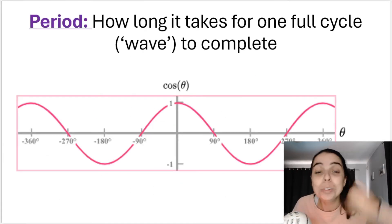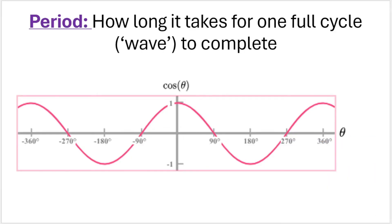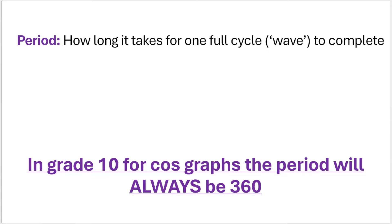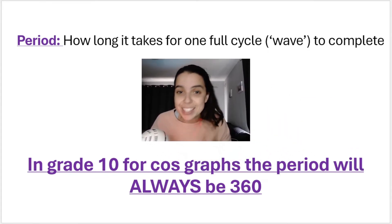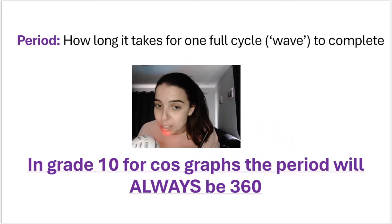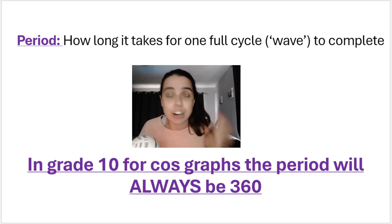You will recall that period is how long it takes for one full cycle or wave to complete. And as I showed you already earlier, this over here, so from where theta is zero to where theta is 360, stopping right over there, that would be one full wave or one full cycle. You can see that that same shape repeats itself every 360 degrees. That is why the period is 360 degrees. And in grade 10, just like for the sin graph, the period will always be 360 degrees. In grade 11 and grade 12 we change the period, but for grade 10, 360 degrees.